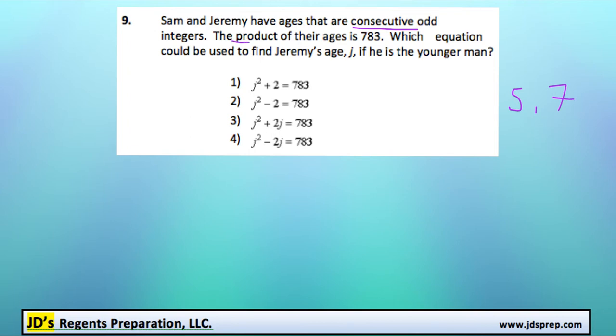We also know that the product of their ages is 783. So if we multiply their ages together, we get 783. Which equation could be used to find Jeremy's age, j, if he is the younger man?